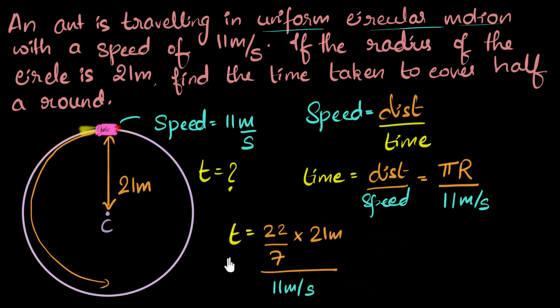Okay, we have some fractions in the numerator, so let's be very careful. Let's see if something cancels out. Yes, seven goes one time, seven goes three times. So we get 22 times three, I will not multiply because I have to do another division. Divide by 11 meters per second. 11 goes two times, and I end up with six. And the meter cancels, and the one over second becomes second. So I end up with six seconds. And so, the ant takes six seconds to complete half a round.